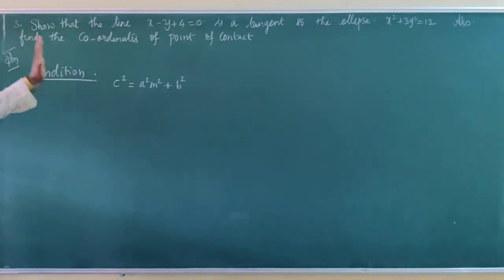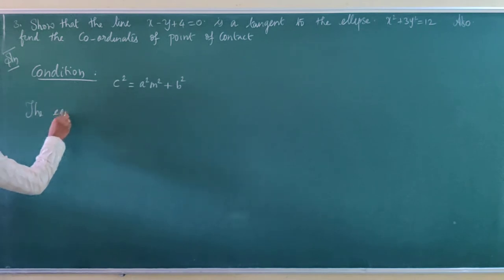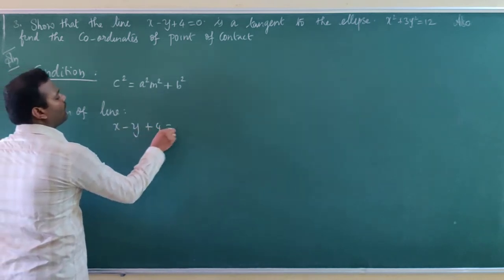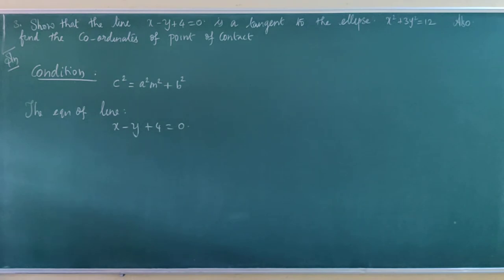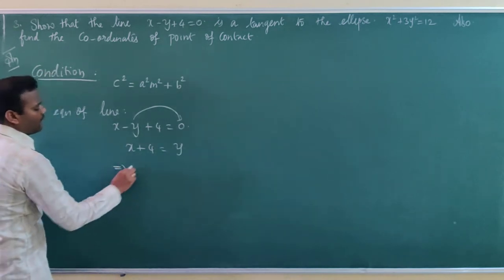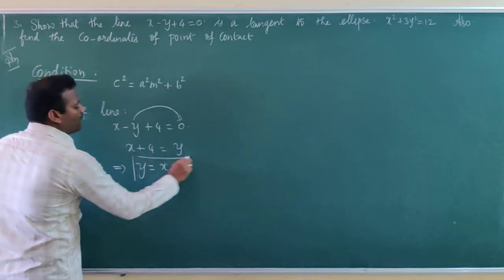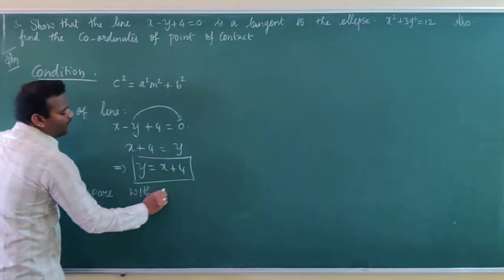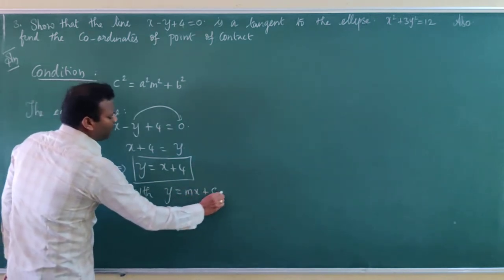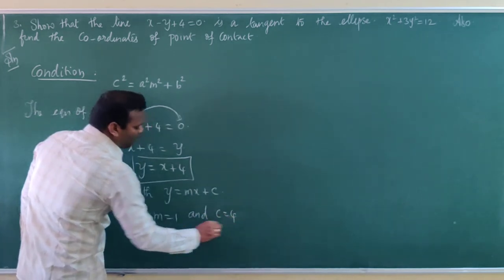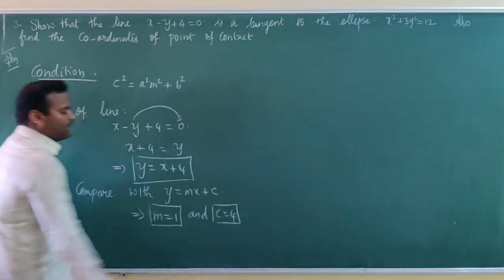First, you have to write the equation of the line in standard form. The equation of the line is given by x minus y plus 4 equal to 0. Bringing y to the other side, we get y equal to x plus 4. Now it is in standard form. Comparing with y equal to mx plus c, we get m equal to 1 and c equal to 4.